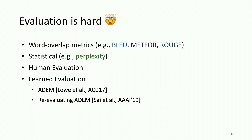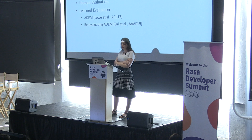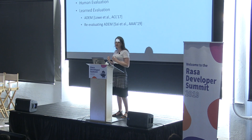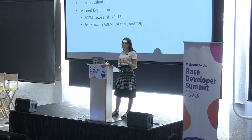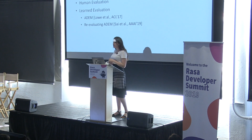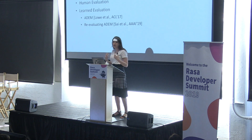There are a lot of works that have been implemented for this purpose. Examples include word overlap metrics such as BLEU, METEOR, and ROUGE. However, these metrics have been shown to correlate poorly with human judgment, resulting in significant bias across different models and datasets. Other approaches include statistical approaches, for example perplexity. However, perplexity captures solely how likely the responses are under a generation probability distribution and does not measure the overall quality of the dialogue.